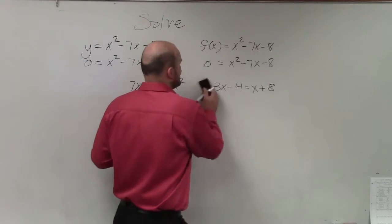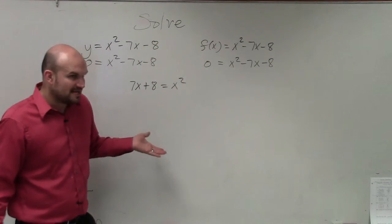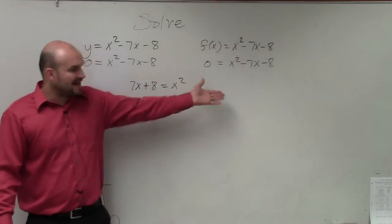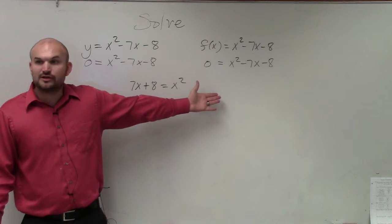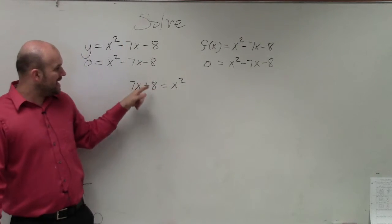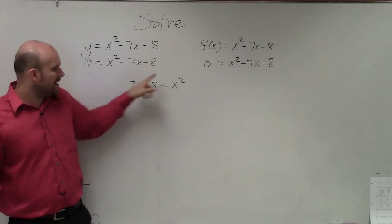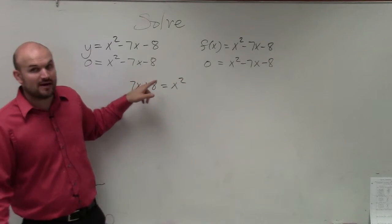Well, the same thing kind of applies here. We've got to get the variables to the same side, but there's a difference here. That type of equation was a linear equation. The variables only had a power of 1. Now, we have a variable that has a power of 2 and a variable that has a power of 1.